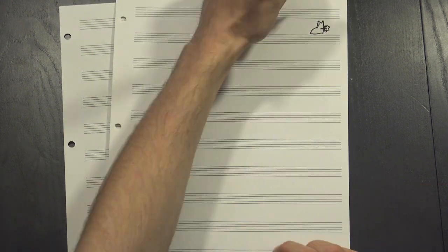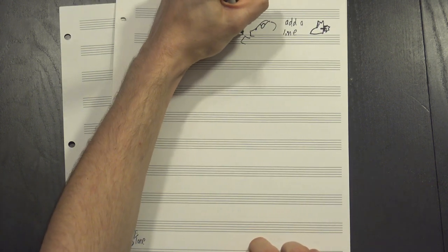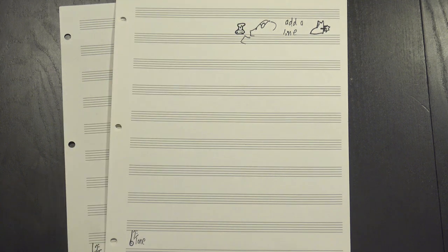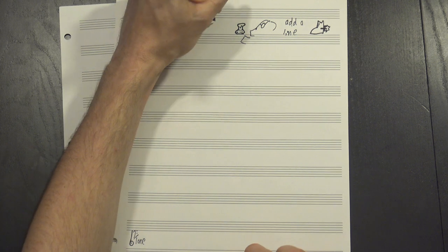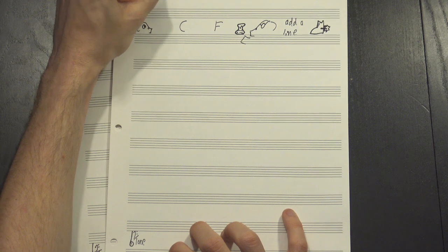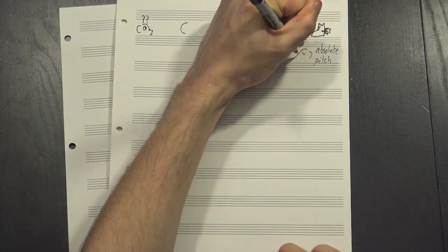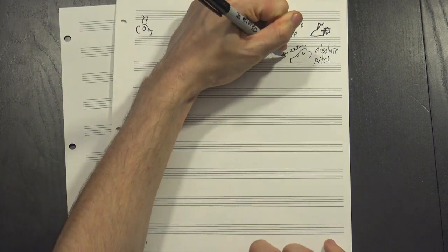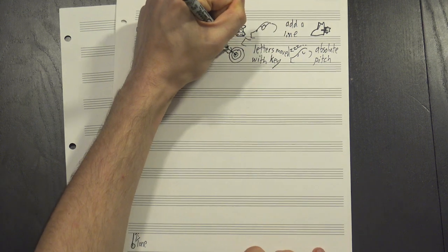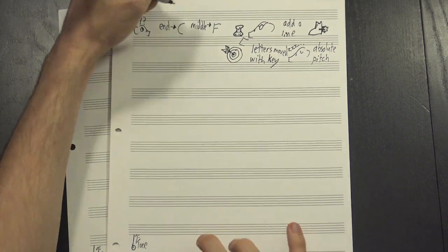The next step, then, was to add a line. This gave you some absolute reference point against which the notes could be compared. This line usually represented the position of either F or C. That's a little misleading, though. Absolute pitch wasn't considered all that important, so the letter names moved around depending on the key. More accurately, the line represented either the middle or the end of the scale.